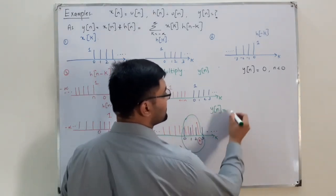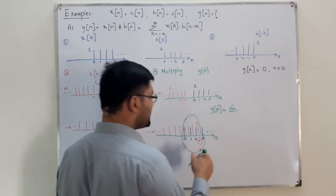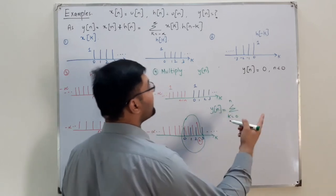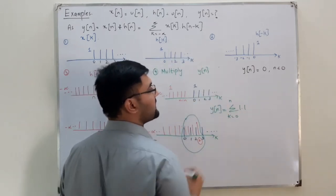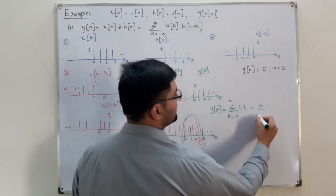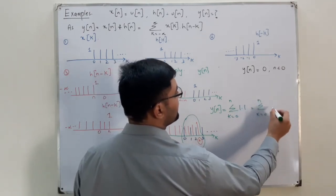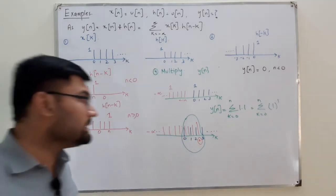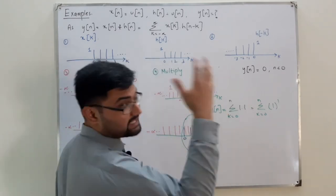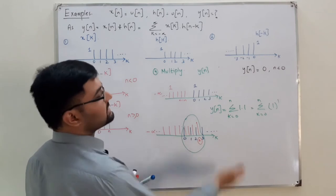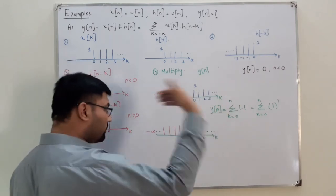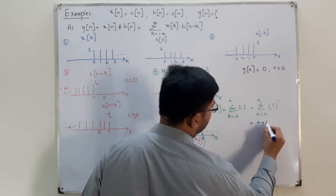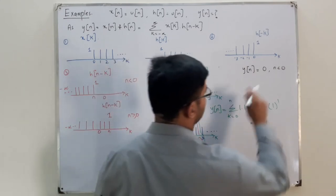So y(n) equals the summation with k running from 0 to n. Since x(k) equals 1 and h(n minus k) equals 1, this is the summation from k equals 0 to n of 1. From mathematics, the summation of 1 from k equals 0 to n gives n plus 1.